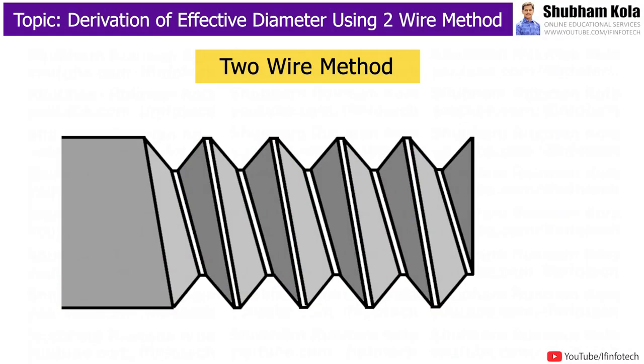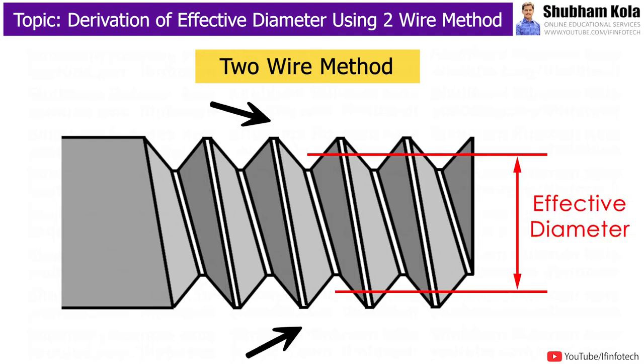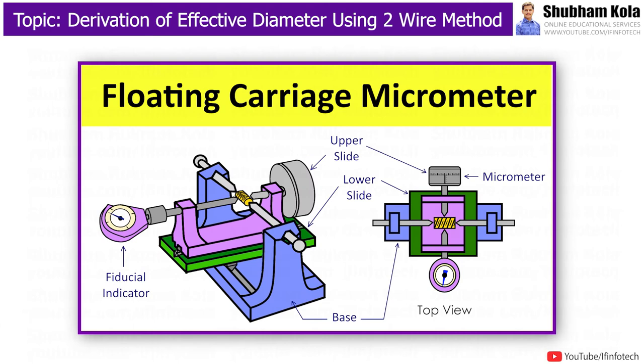In this video, we are going to discuss the derivation of effective diameter using two-wire method. In the previous video, we've seen how to use floating carriage micrometer to measure diameters of thread workpiece.